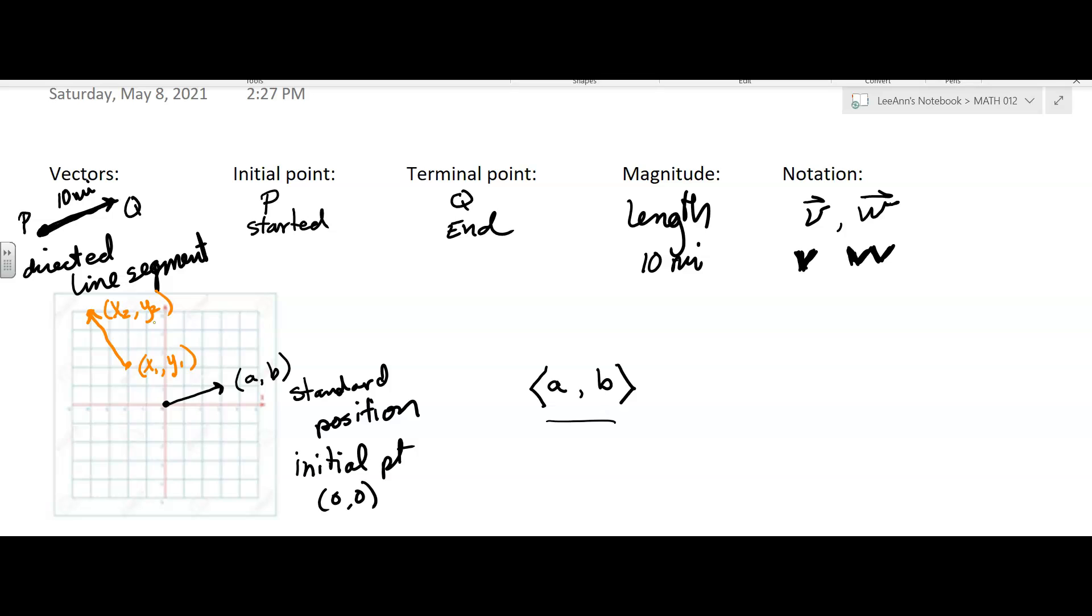Anyway, if you want to find the vector in standard position to do that, you take x₂ minus x₁ comma y₂ minus y₁. So we've seen that type of thing before, but that puts it in standard position.